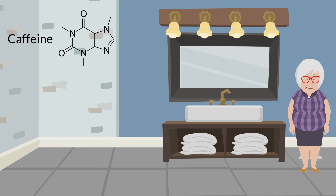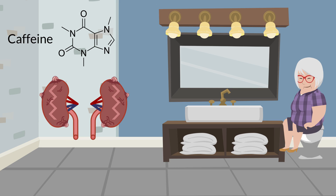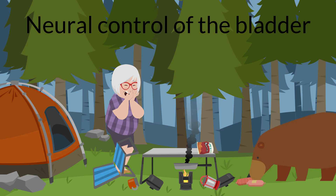Caffeine is a diuretic that, through a signaling cascade, increases levels of free adenosine by blocking the adenosine receptor. Therefore, you wake up drinking coffee. Caffeine's diuretic effect also leads to increased water excretion and salt excretion from the kidney. This can cause overactive bladder and urgency incontinence. Now we will discuss neural control of the bladder.